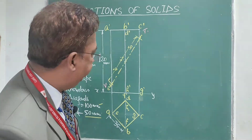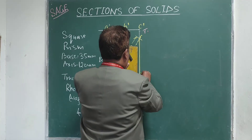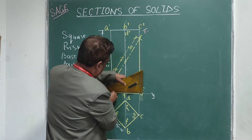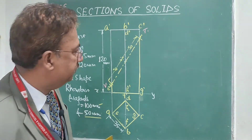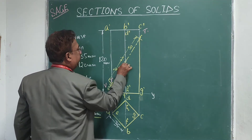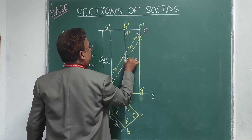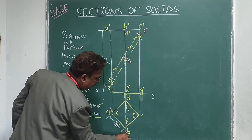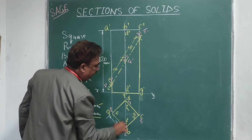For the top view, all four cut points will be on the corners of the square. If I label those cut points, this will be point 1-dash, this is 2-dash, this will be 3-dash, and this will be 4-dash. In the top view, this will be 1, this will be 2, this will be 3, and this will be 4.